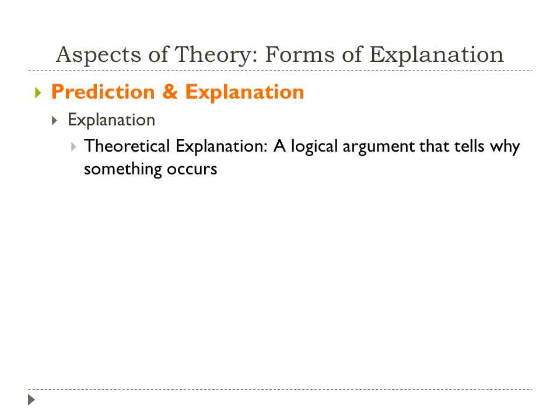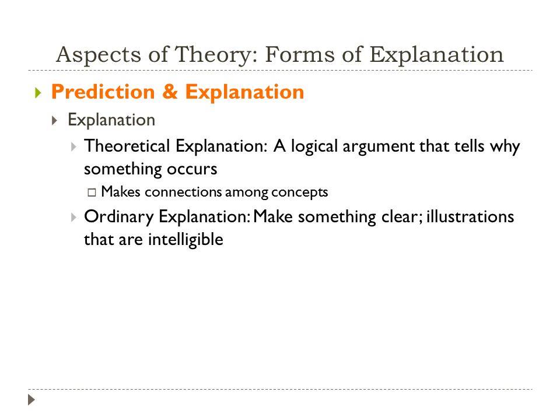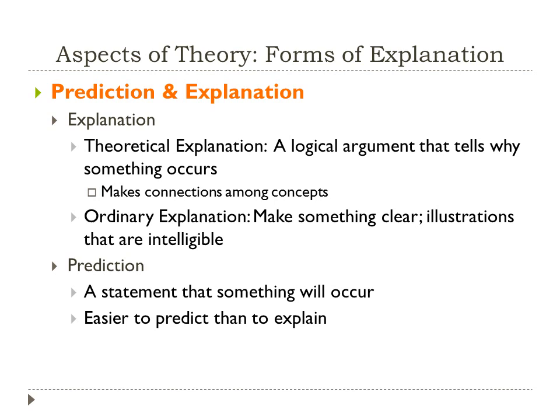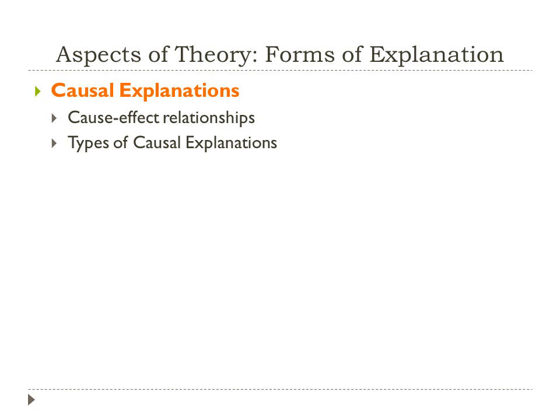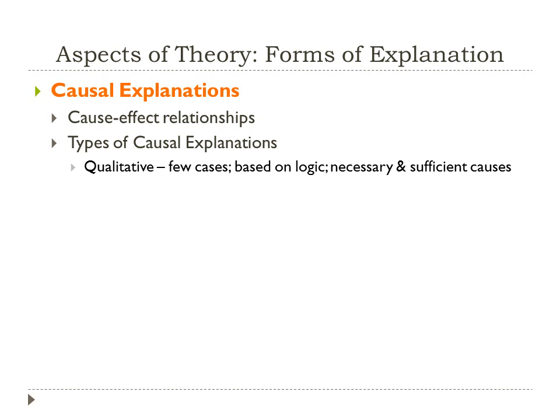Theories can take on both prediction and explanation. A theoretical explanation gives you a logical argument and tells you why something is occurring — it makes connections among concepts. Some theories are used to predict, stating that something will occur; it's easier to predict than to explain something. One type of explanation theories can make are causal explanations — looking at the cause-effect relationship between variables. Qualitative causal explanations look at a few cases and make an explanation about the causal relationship based on logic, using necessary and sufficient causes.